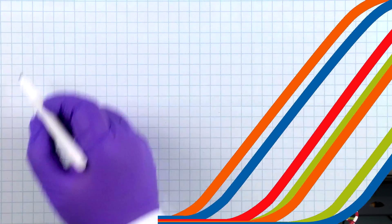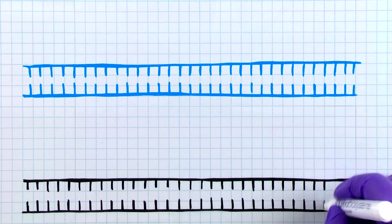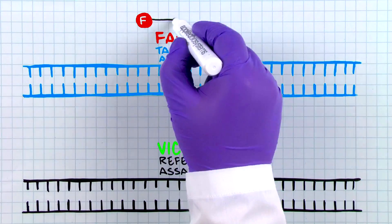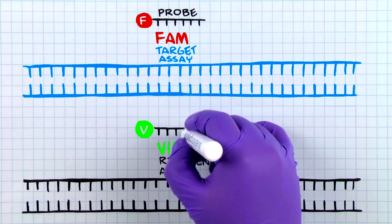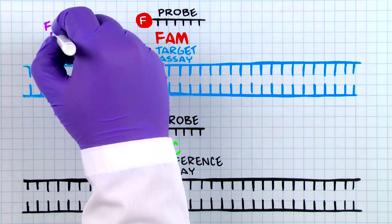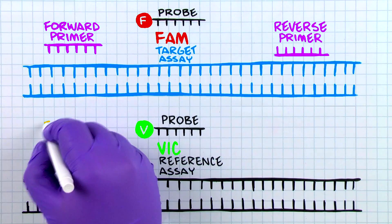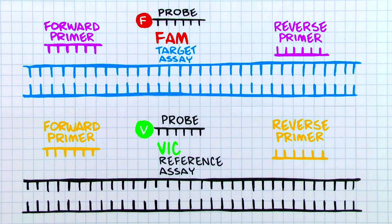So how does all this work? Let's take a look at our lab book. TaqMan copy number assays are duplex experiments using a FAM-labeled target assay and a VIC-labeled referent assay in the same well to quantify small-fold changes. The reference assay targets a gene of known and stable copy number. For example, RNase P is often used for human samples as it has shown to be present and stable at two copies.